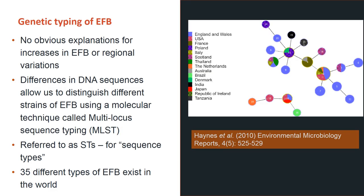In the UK, there are some areas where EFB is particularly problematic, and other areas where it is not present at all. Researchers sought to determine why there are regional differences in EFB. It was found that there are differences in the DNA sequences of different strains of the bacterium, and this allows us to classify the different strains using a method called multi-locus sequence typing (MLST). This typing allows us to classify strains of Melissococcus plutonius based on their sequence type, or ST. So far, 35 different strains of EFB have been identified worldwide, while in the UK we can have up to 19 strain types.